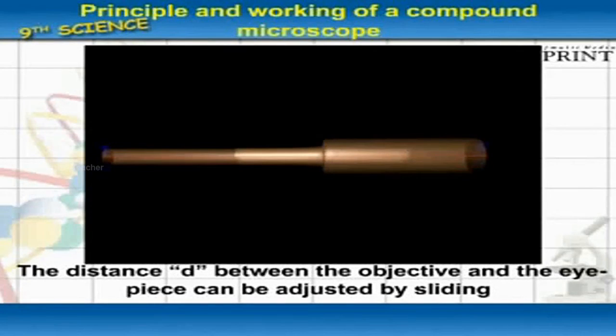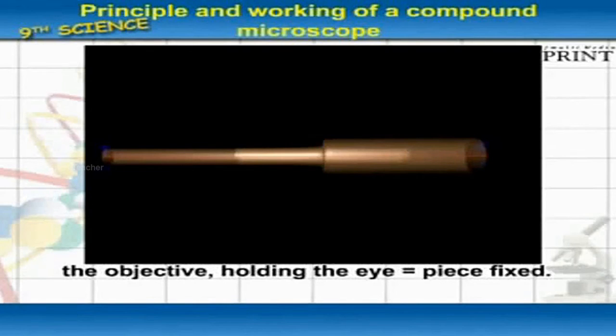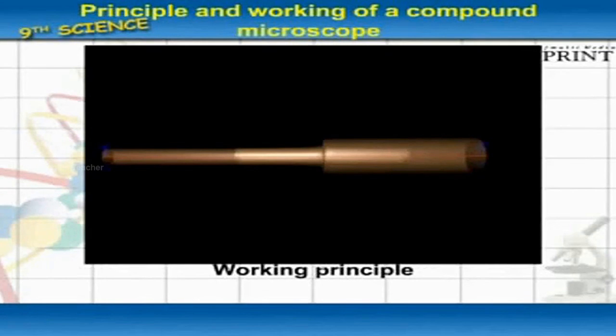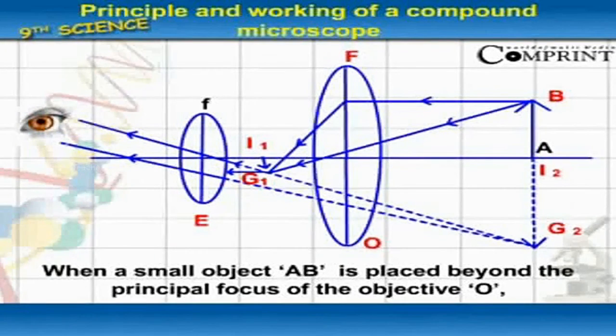The distance D between the objective and the eyepiece can be adjusted by sliding the objective while holding the eyepiece fixed. Working Principle: When a small object AB is placed beyond the principal focus of the objective O...